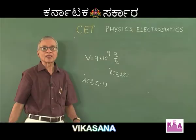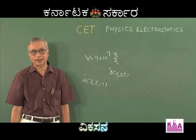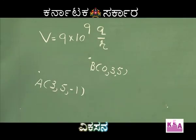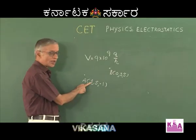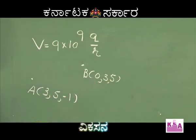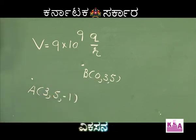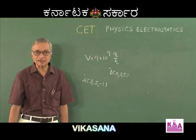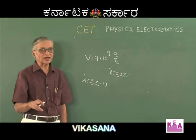By the distance formula in coordinate geometry, the distance R between points A and B is given by R = √[(x₂−x₁)² + (y₂−y₁)² + (z₂−z₁)²]. It can be done orally: (0−3)² = 9, (3−5)² = 4, giving 9+4 = 13, and (5+1)² = 36. So 36 + 13 = 49, and √49 = 7.